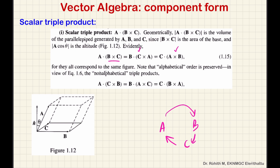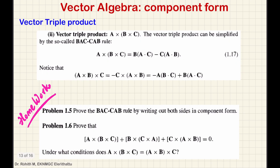A dot (B cross C) obeys a commutative property. However, A cross B is not the same as B cross A. A cross B equals minus of B cross A. So interchanging gives a minus sign, and the alphabetic cyclic order is preserved. You will get A dot (C cross B) with the appropriate cyclic substitution.